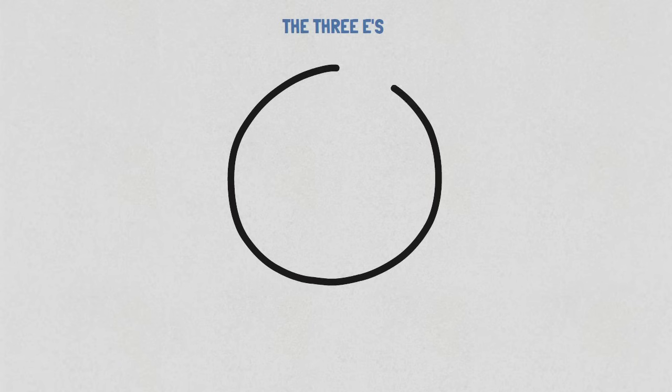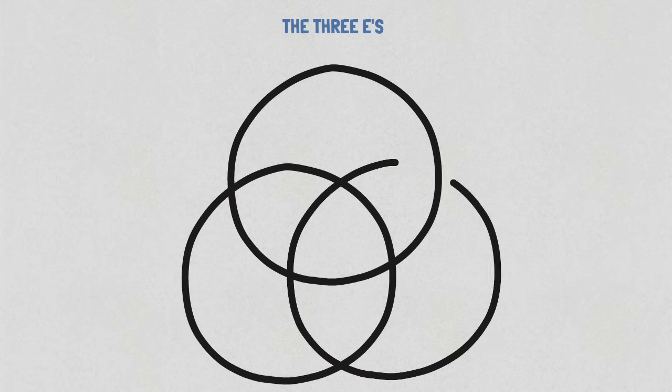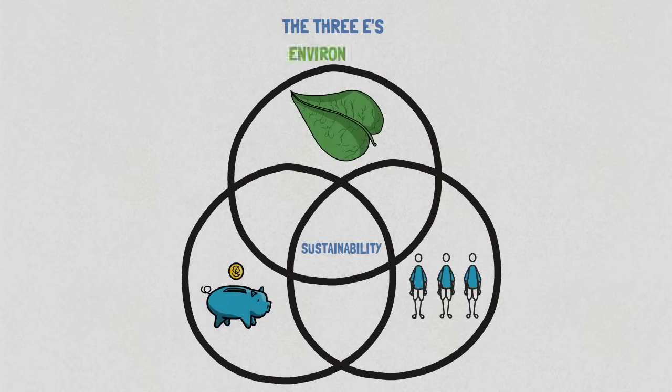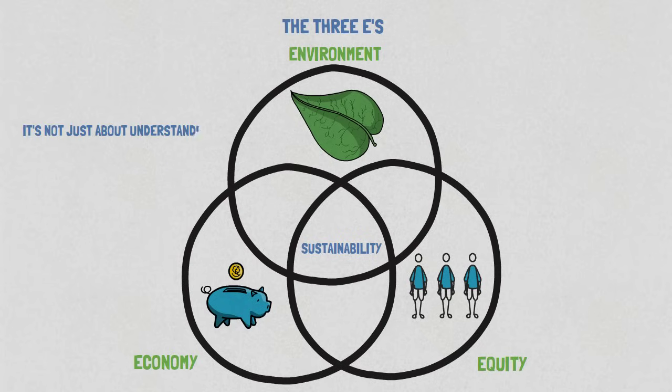One of the other big frameworks that we use to talk about sustainability is the three E's. In business, we call that the triple bottom line. Some people call it the three legs of the stool. And that's environment, economy and equity. And it's not just about understanding that we need to manage all of those. It's understanding how they're connected.